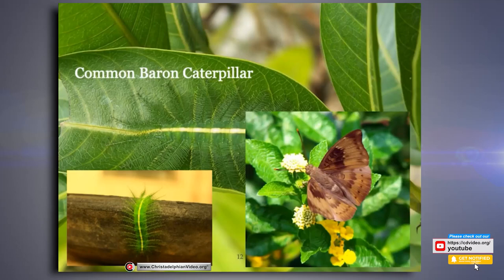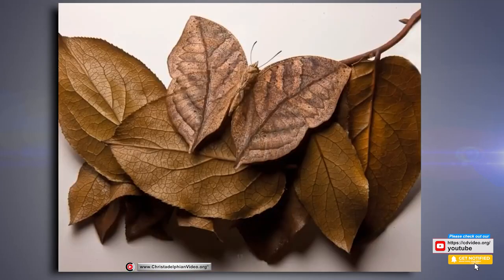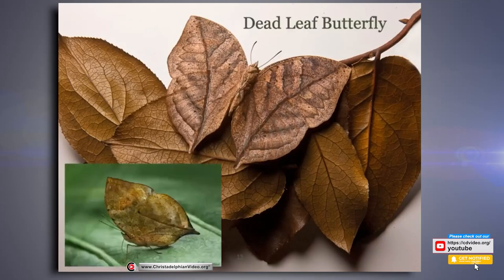This one's a bit easier and it has a very imaginative name: the dead leaf butterfly. If it were on the floor of a forest with all the dead leaves, it would be very well hidden. There it is on a green leaf to show the difference — it's got veins, dark patches, it's not completely uniform. Again, disguised well.